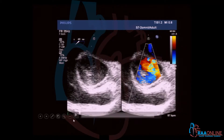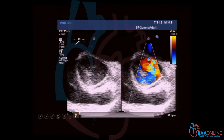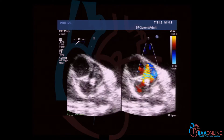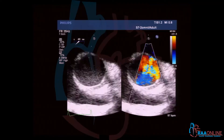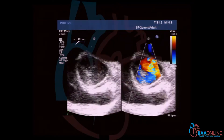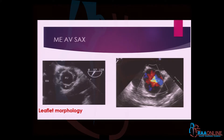Can you tell me what is happening here? What do you think is happening? The main things to see here are leaflet morphology and site of regurgitation.